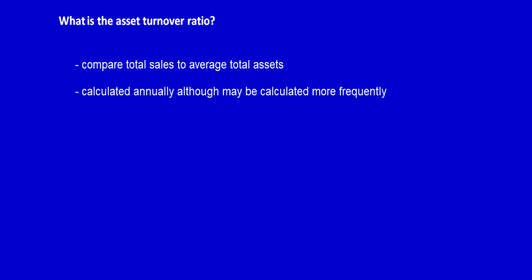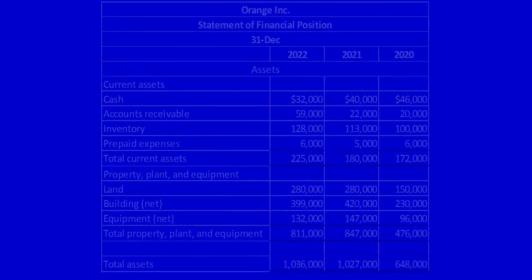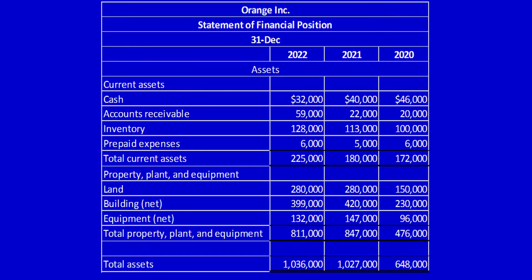Let's look at Orange Inc. Orange's total assets are provided on the Statement of Financial Position, also called the Balance Sheet. They include both current and non-current assets. These are averaged to give a better measure of what assets would be over time rather than at a point in time.